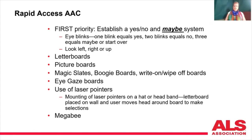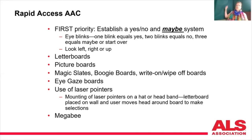Beginning with rapid access, the first priority — the absolute thing that you must do — is establish a yes, no, and maybe system. This is really imperative because people that are unable to speak are often ignored. Imagine if you had to call first responders and they came into your house but didn't know how your loved one communicates. So you establish a yes, no, maybe system, write it down, and put it on the wall.